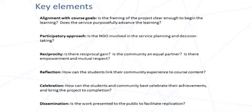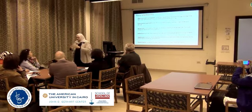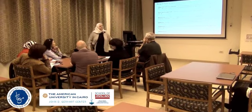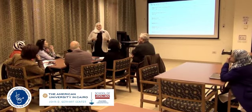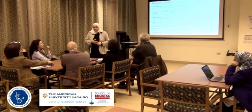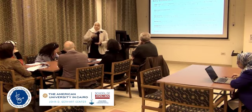Some of the key elements that define community-based learning: the service has to be aligned to the course learning goals. If I'm teaching chemistry, I don't want to take my students out to the community and have them teach literacy classes — that's community service, where I could be doing any service. Community-based learning ensures that students are learning what the course sets out to fulfill. Whatever service students work on must advance the learning they are supposed to achieve in that specific class.